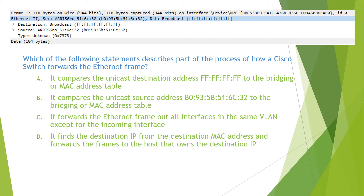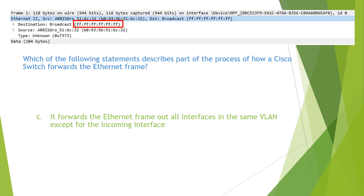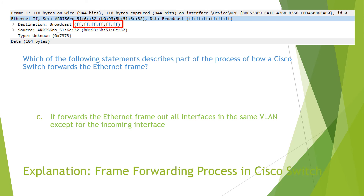The question reads: which of the following statements describes part of the process of how a Cisco switch forwards an Ethernet frame? The destination MAC address in this Ethernet frame is a broadcast MAC address. Therefore, the switch will forward the Ethernet frame out of all interfaces in the same VLAN except the incoming interface. The answer is C. You can find the detailed explanation in the video 'Frame Forwarding Process in a Cisco Switch.'